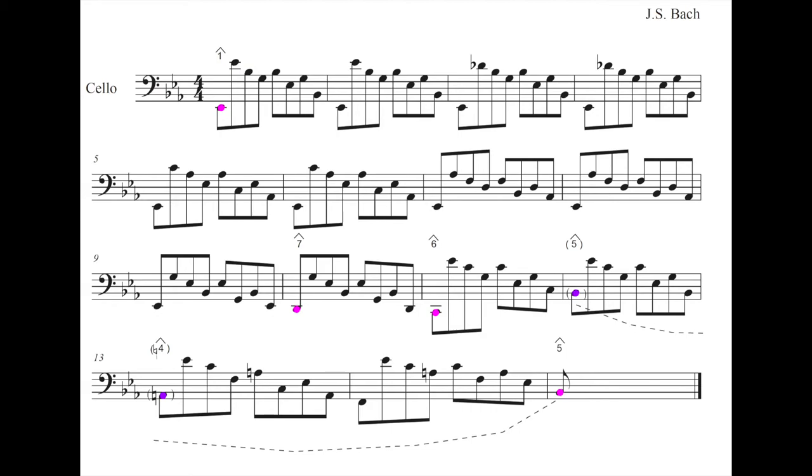And then in this final slide you can see this lovely underpinning of a linear scalar descent from 1 simply going down to 5: 1-7-6-5. We do have that raised scale degree 4 with the A-natural in bar 13, but that's in parentheses because we come back to 5 in bar 15. So we can analyze that raised 4 as a lower neighbor tone to the B-flat. So here are those gorgeous opening measures.